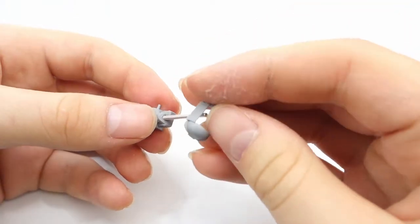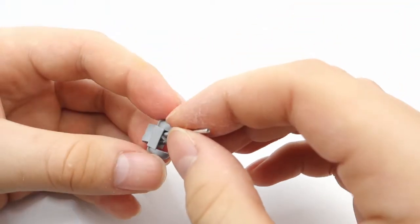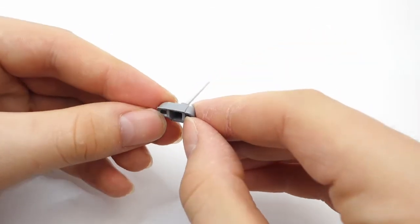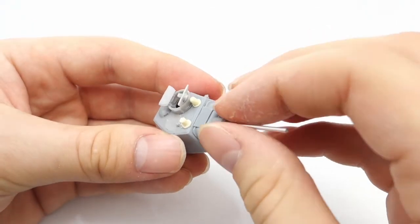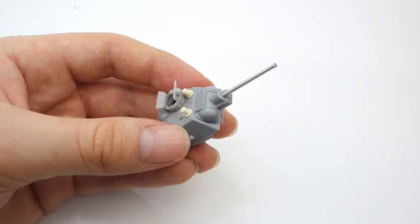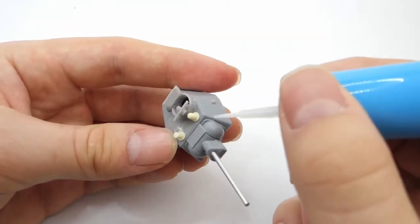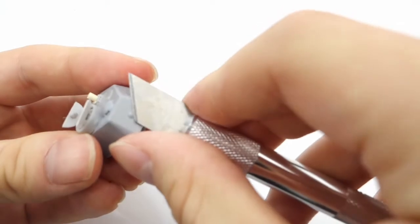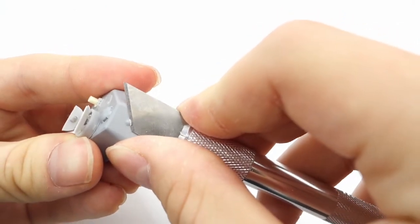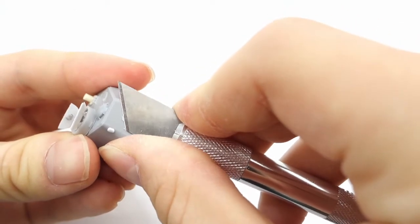Now I can proceed to assembling the whole gun mantlet and attaching it to the turret. I of course secure it with glue. I also remove the pistol port from back of the turret because it looks bad.